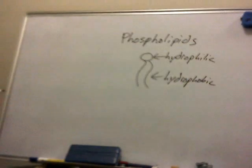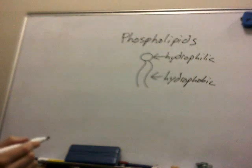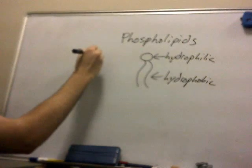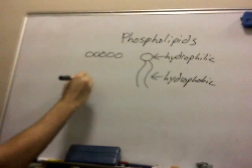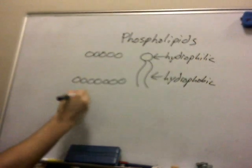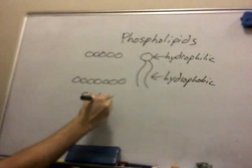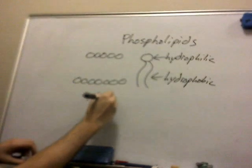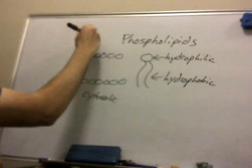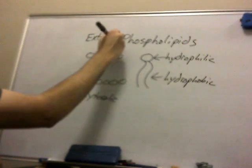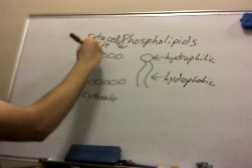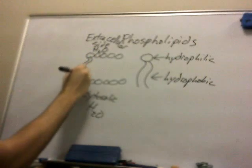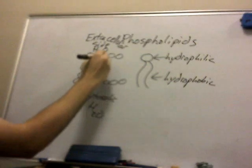When in a water solution — obviously on the extracellular side and the cytosolic side there's water — these phospholipids arrange themselves naturally into a lipid bilayer, with the hydrophilic heads on the cytosolic side and the extracellular side, and the hydrophobic tails aggregating in the center to avoid water molecules.